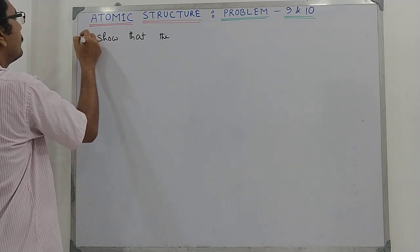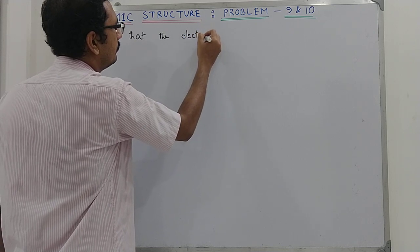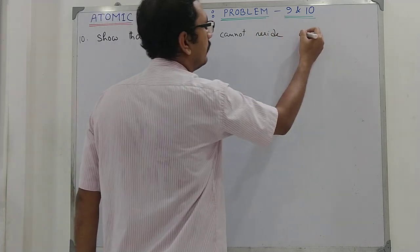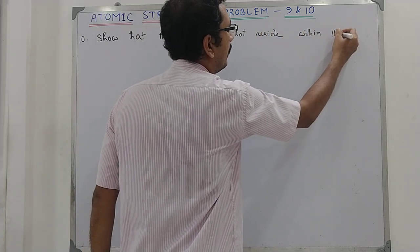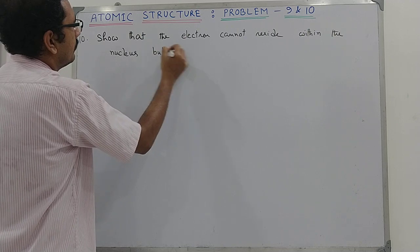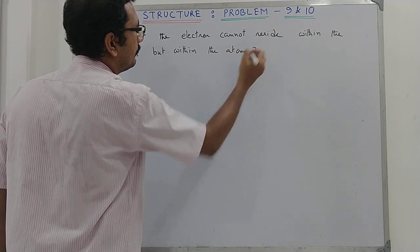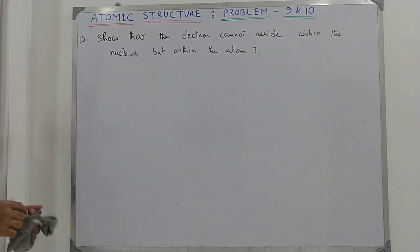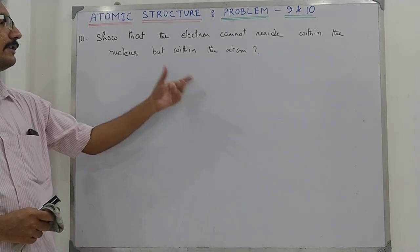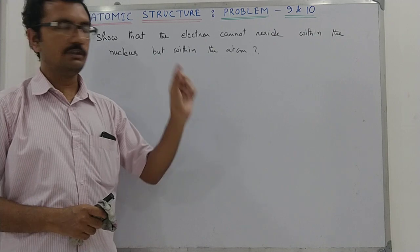Now Problem 10: show that an electron cannot reside within the nucleus, but can reside within the atom. This is a beautiful problem, and to solve it you must know the Heisenberg uncertainty principle. The Heisenberg uncertainty principle can prove that the electron cannot reside within the nucleus, but it can reside within the atom.